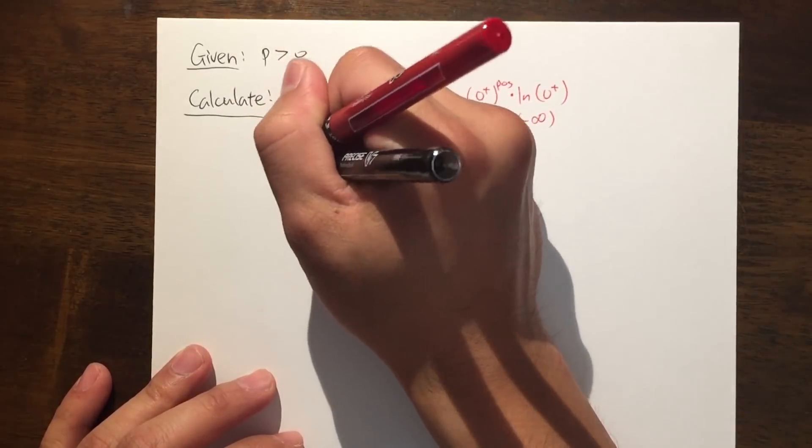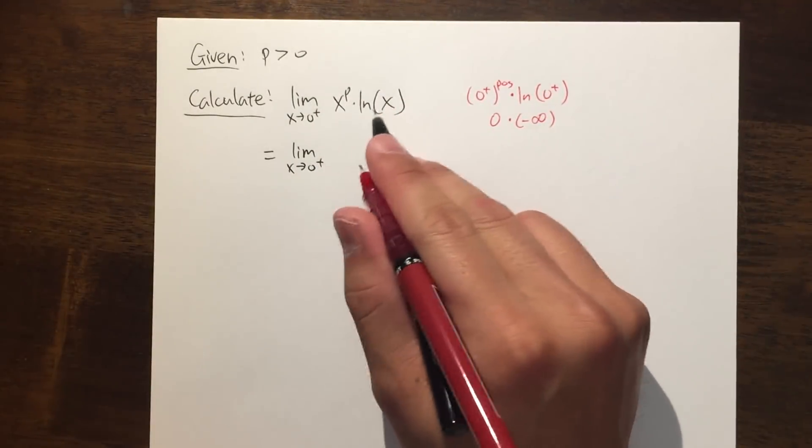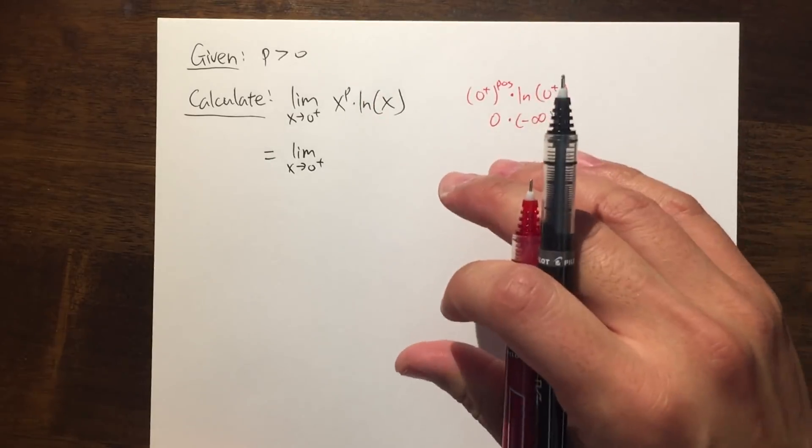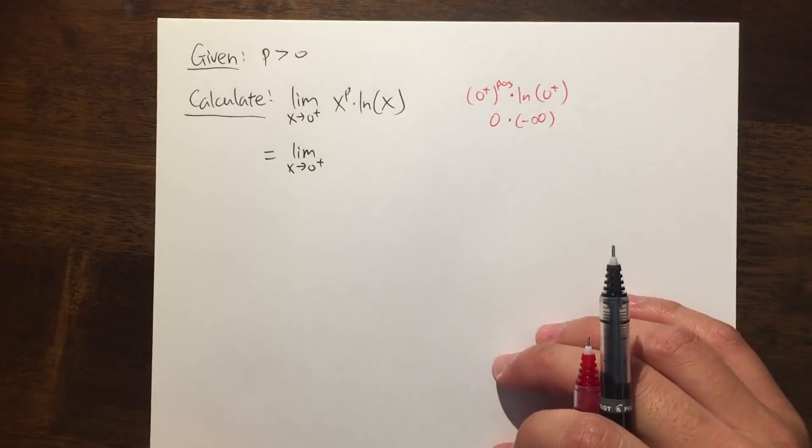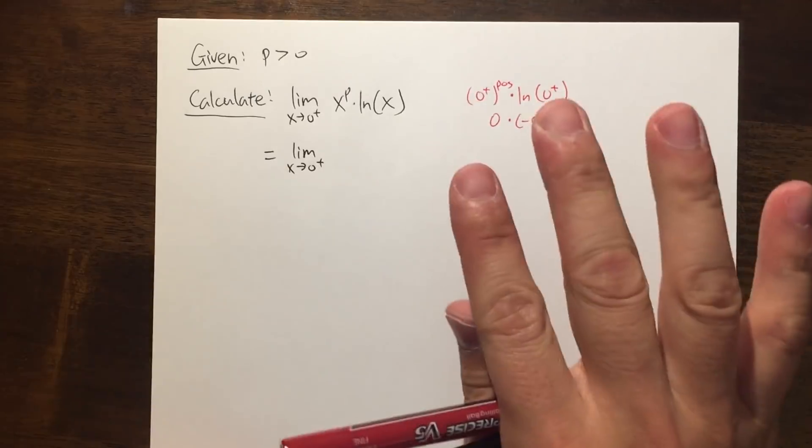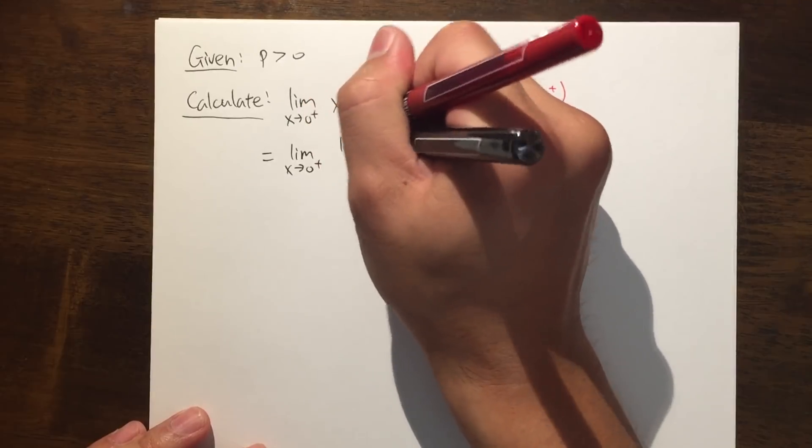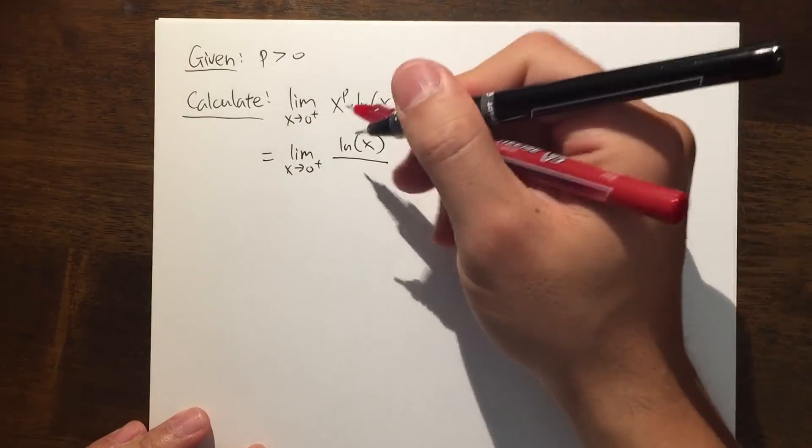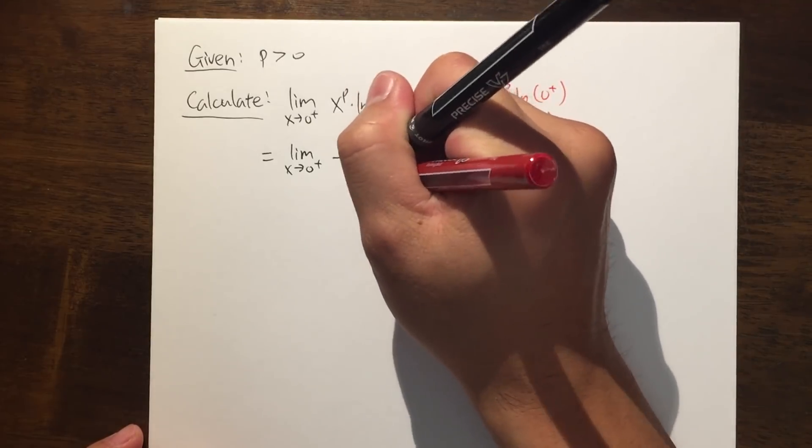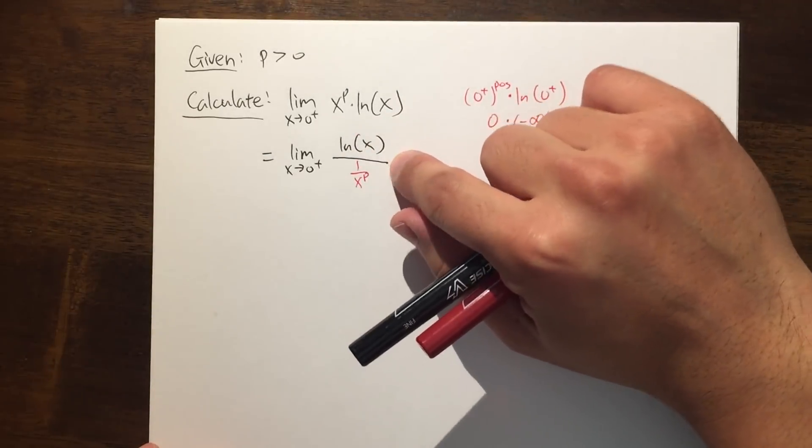So to make that happen, let me just write down the limit as x goes to 0 plus. I will pick one of this factor and bring it down so that I can change that into either a 0 over 0 situation or an infinity over infinity situation. Let me keep the ln x on the top and then I will bring the x to the p's power down and I will get 1 over x to the p's power. If you do some algebra, you will see this is the same as that.